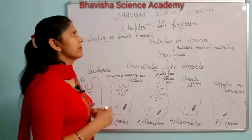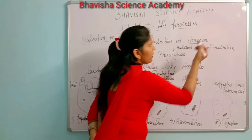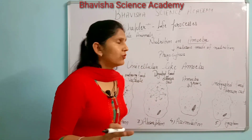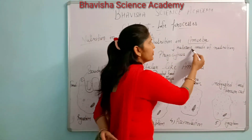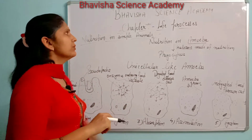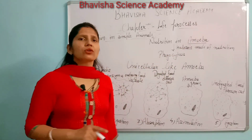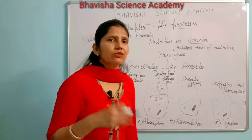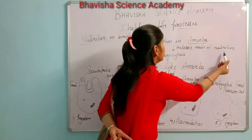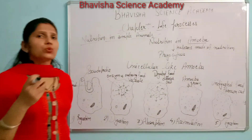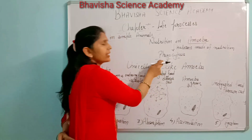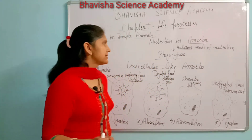Nutrition in simpler animals: amoeba is a simple organism that is unicellular. Amoeba directly takes solid food. Those organisms that directly take solid complex food are said to follow the holozoic mode of nutrition. The process by which amoeba takes in food is known as phagocytosis.